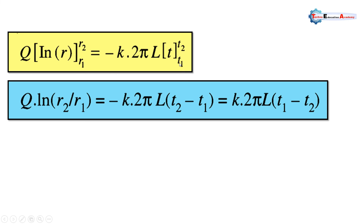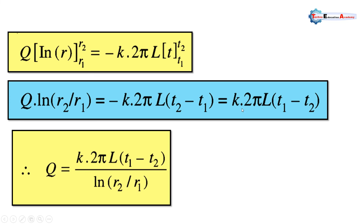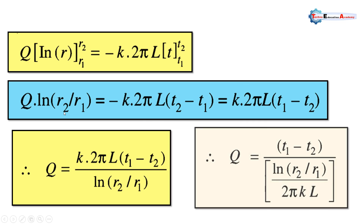Rearranging this equation and removing the minus sign, we get q·ln(r2/r1) equals k·2πrl·(t1 minus t2). Now we isolate q, since our requirement is to derive the equation of heat transfer through a hollow cylinder. So q equals k·2πl·(t1 minus t2) divided by ln(r2/r1).